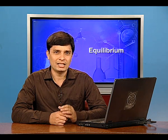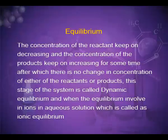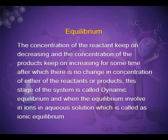When reactants in a closed vessel at a particular temperature react to give products, the concentration of the reactants keeps decreasing and the concentration of the products keeps increasing for some time, after which there is no change in concentration of either reactants or products. This stage is called dynamic equilibrium. When the equilibrium involves ions in aqueous solution, it is called ionic equilibrium.